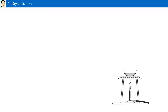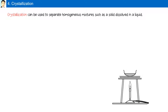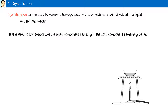Crystallization can be used to separate homogeneous mixtures such as a solid dissolved in a liquid. For example, salt and water. Heat is used to boil or vaporize the liquid component, resulting in the solid component remaining behind. The physical property used to separate components is boiling point.